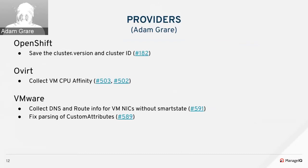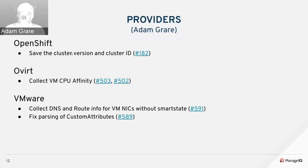For VMware, we now collect DNS and route information. If you have guest tools installed, VMware pulls back DNS server and routing table information. Previously the only way to get this was with smart state; now we read additional guest tools properties and populate the network record. We also fixed parsing of custom attributes — after switching to RBVMOMI, these were objects instead of hashes, causing them to return nil and not get saved. That's now fixed.